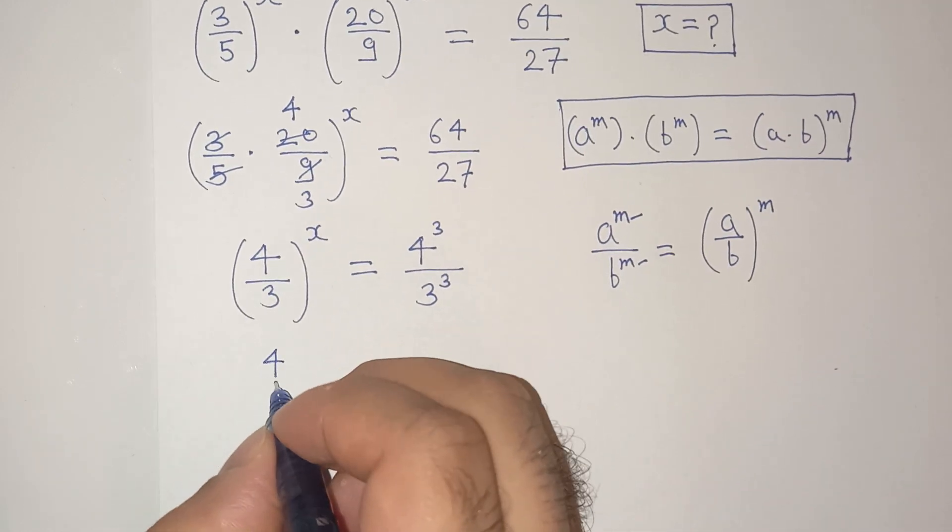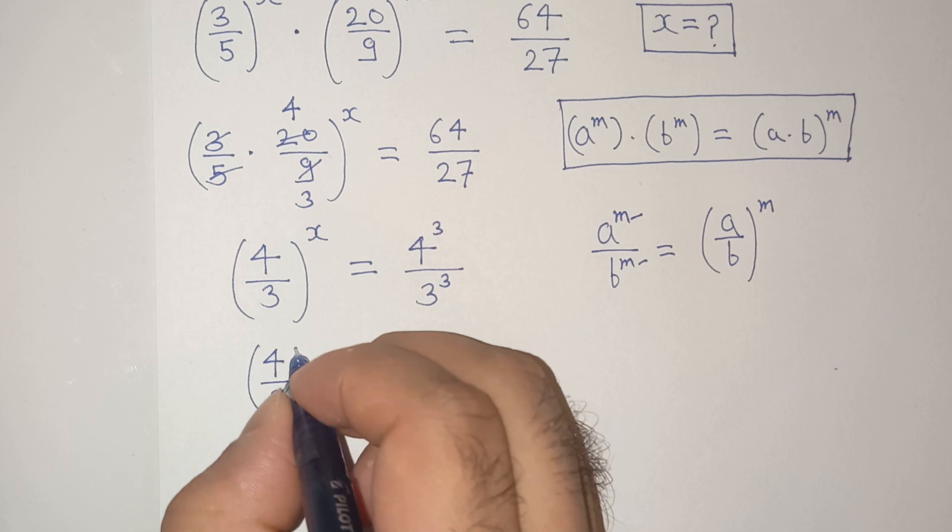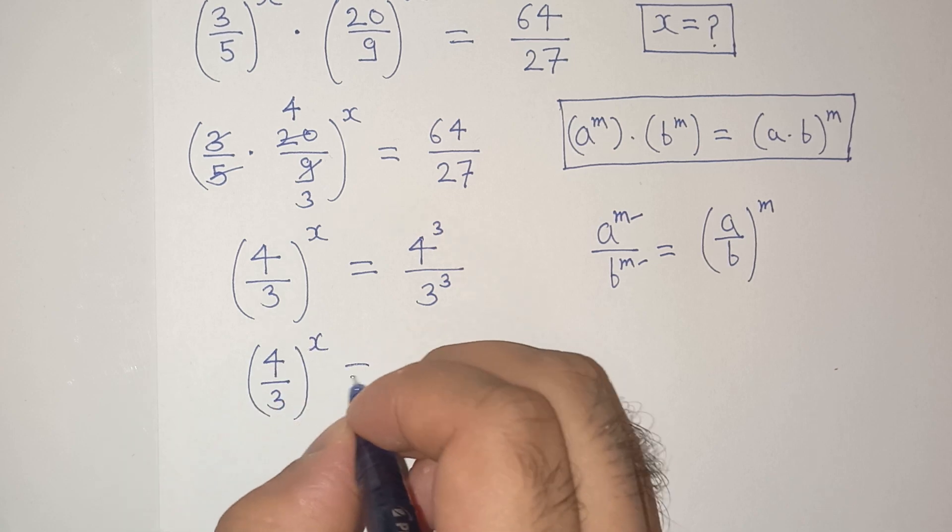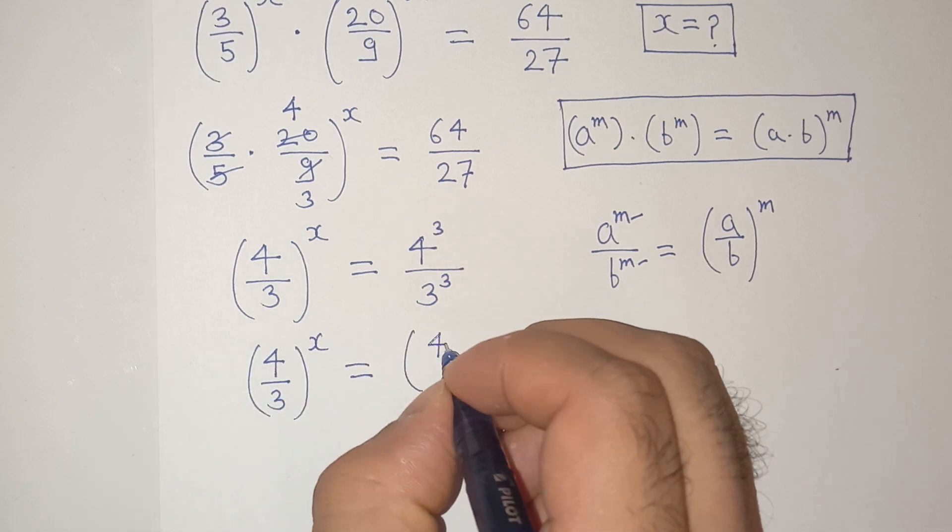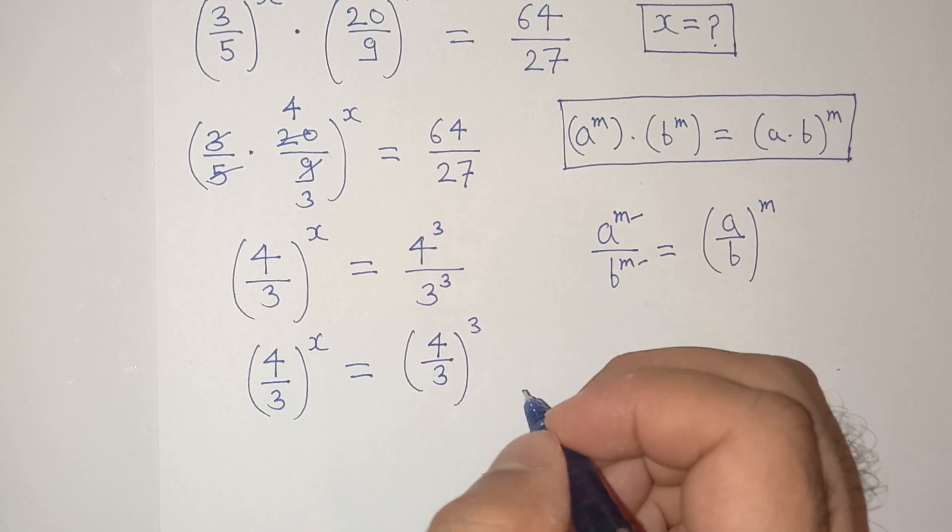So the above equation will be 4 by 3 power x equals to 4 by 3 power 3.